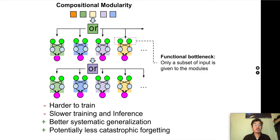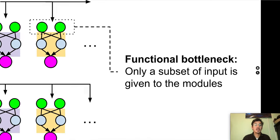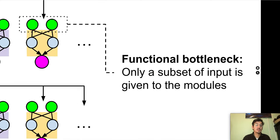The main challenge of compositional modularity is how to learn specialized modules that represent the real underlying data generative mechanisms. Another challenge is composing modules conditioned on an input sample. Prior works have pointed out the usefulness of information bottlenecks for this task. Attention can be seen as one such bottleneck.